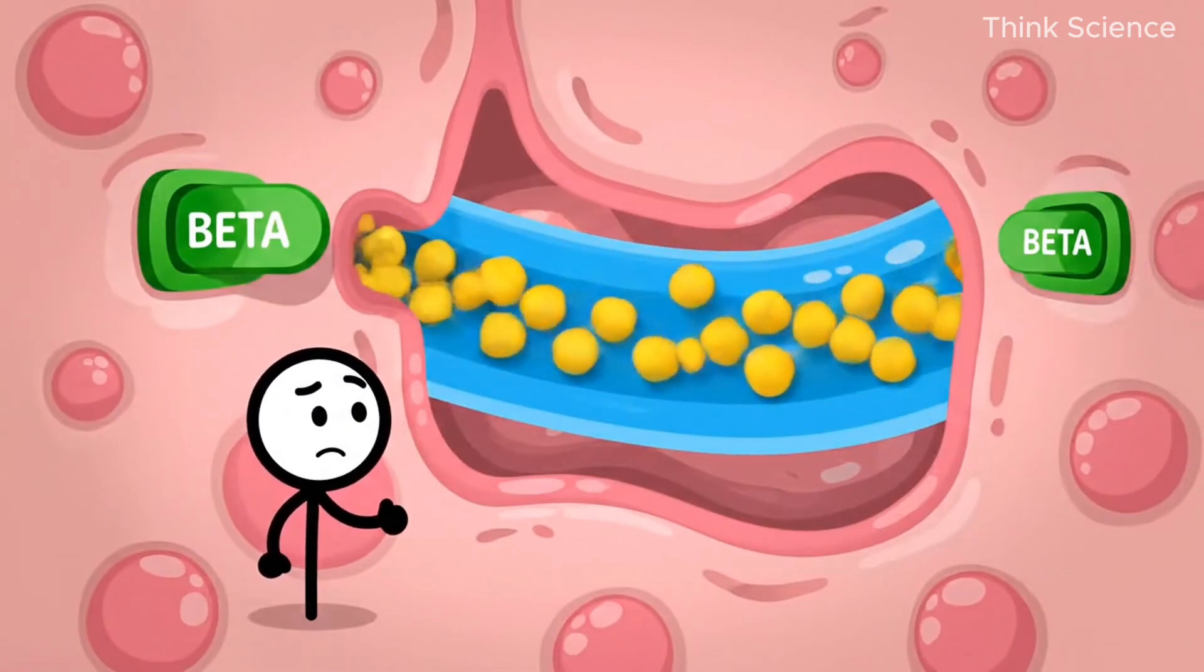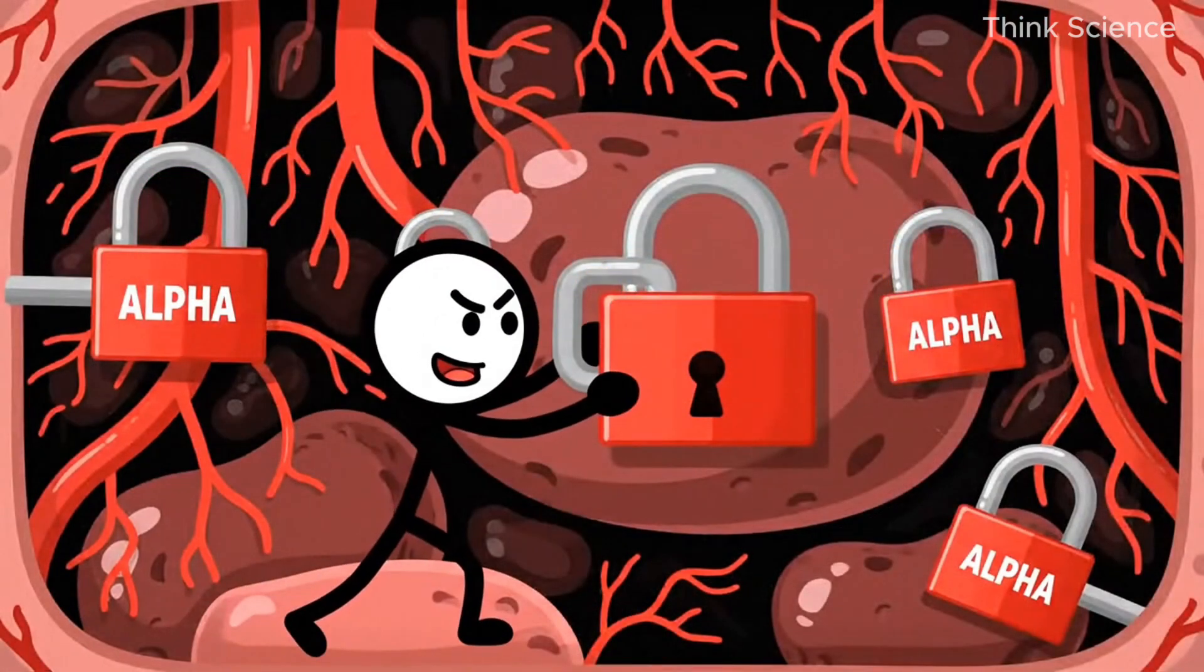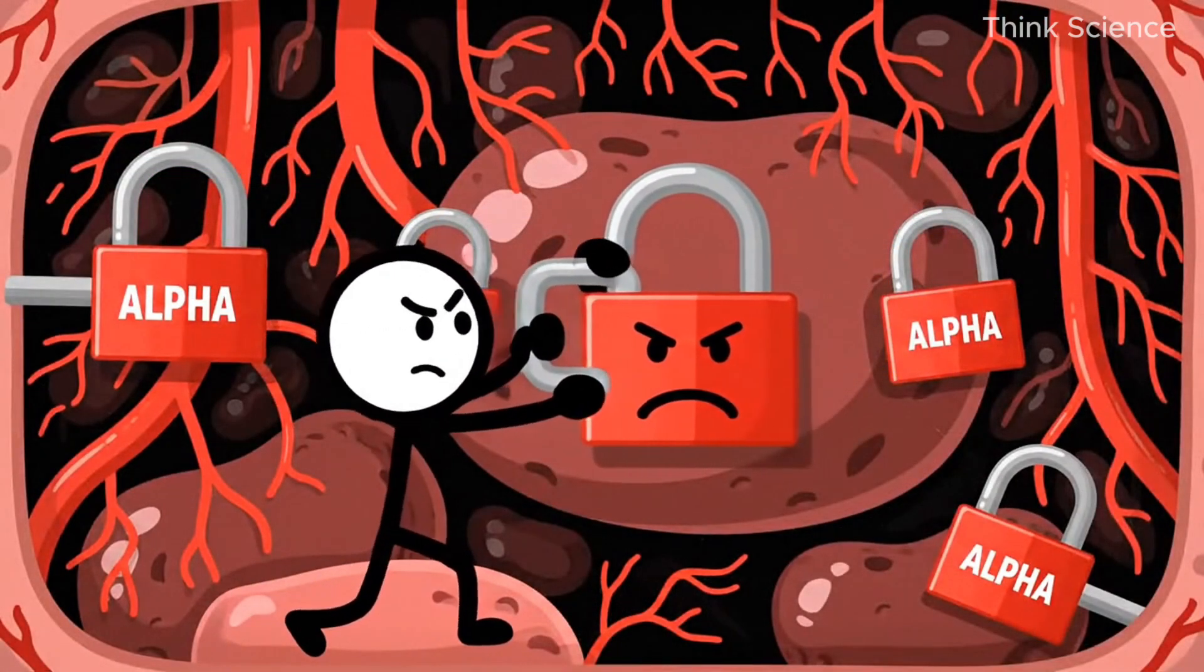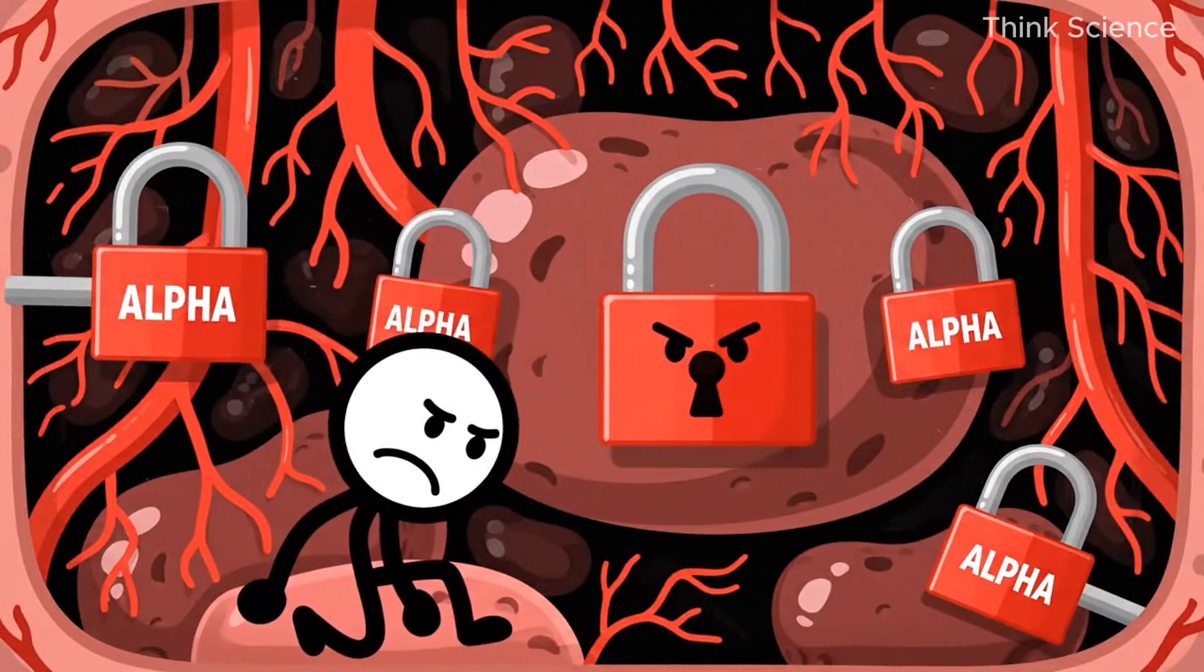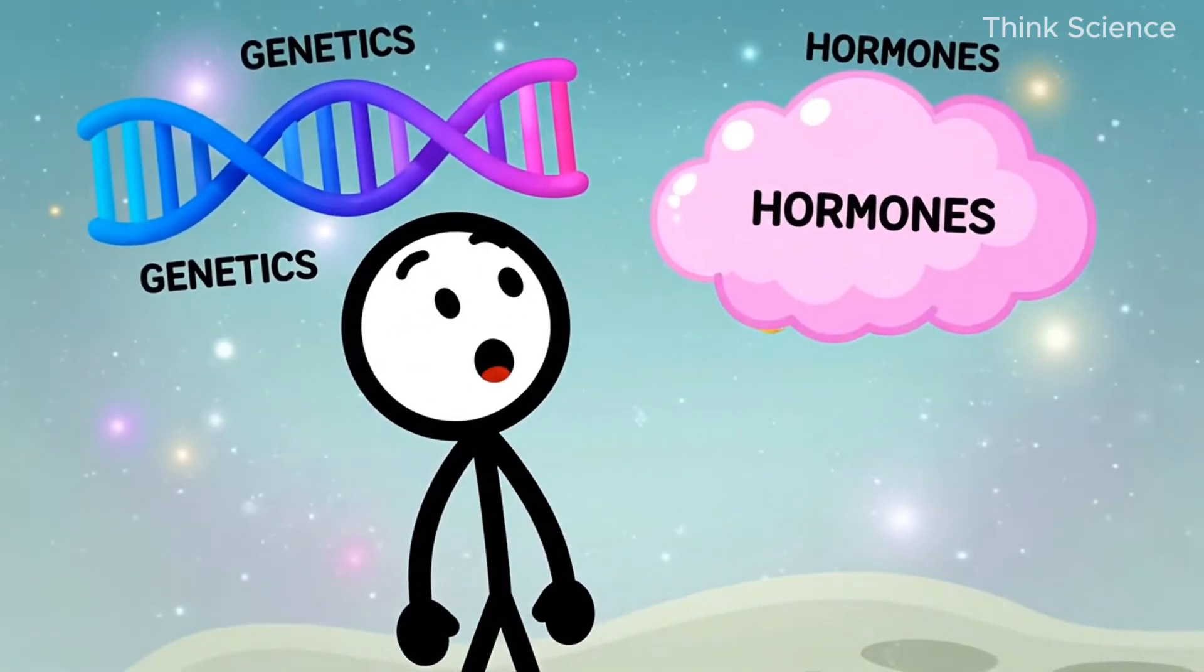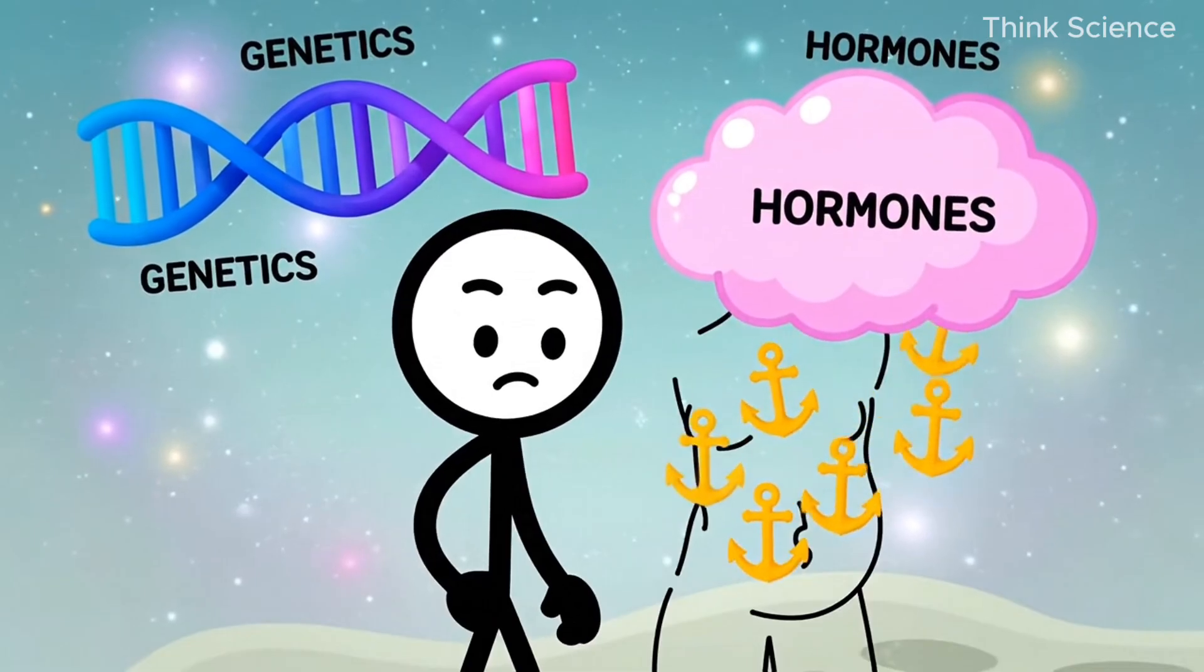But belly fat has more alpha receptors, the stubborn locks that say, keep the fat right here. Genetics and hormones shape where fat clings the hardest. It's not your fault. It's biology.